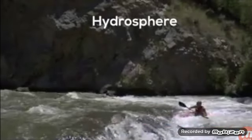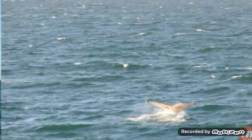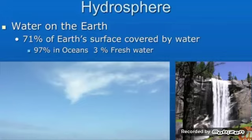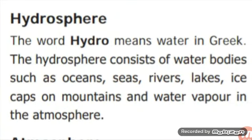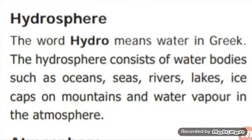Next one, hydrosphere. It is the water sphere. The word hydro means water in Greek. The hydrosphere consists of water bodies such as oceans, seas, rivers, lakes, ice caps on mountains and water vapor in the atmosphere. About 71% of the earth's surface is covered by water. Without water, human beings, plants and animals cannot survive.